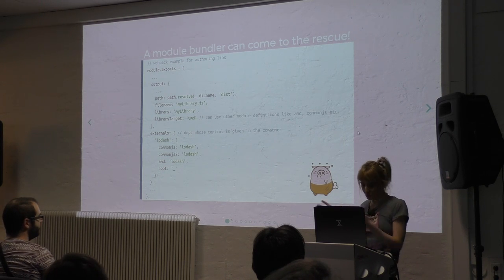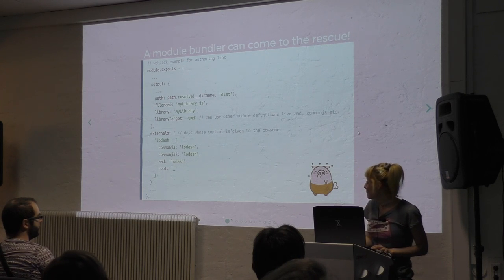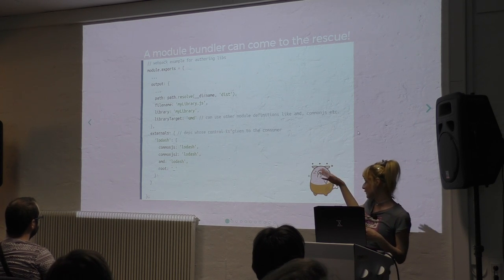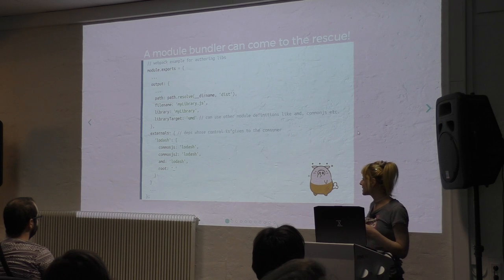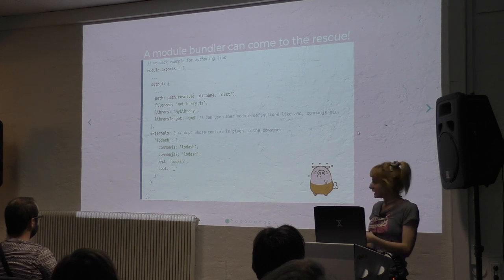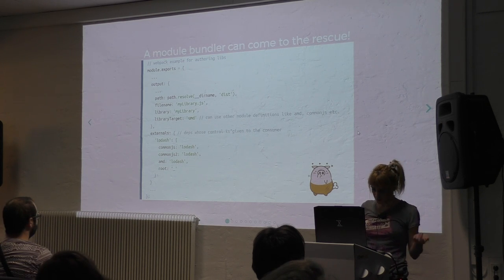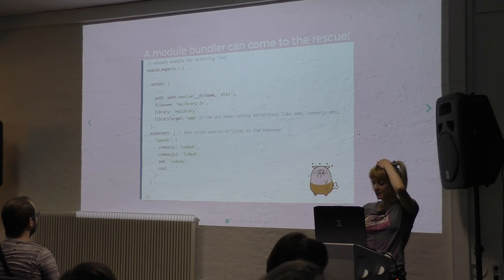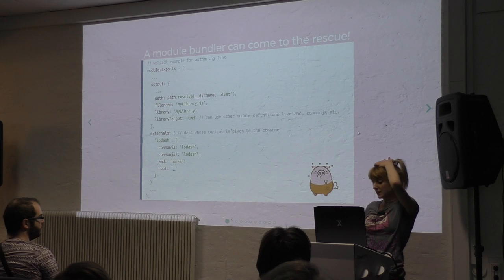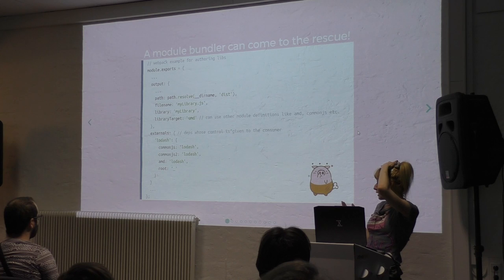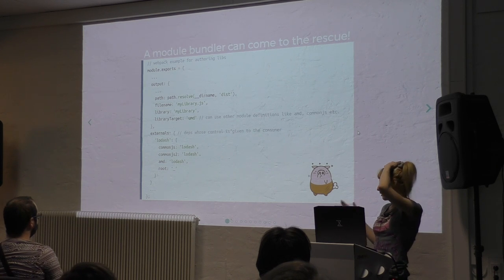In this case, Webpack — and probably other bundlers. This is a piece of configuration for Webpack. You would define the name of your library. With the library target, you define the module definition you want for your library. This will eventually create a bundle — in this case, UMD. You can't go wrong if you want browser compatibility, but you can use other module definitions too. The externals are really important.